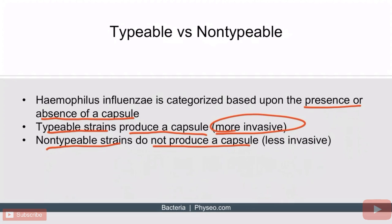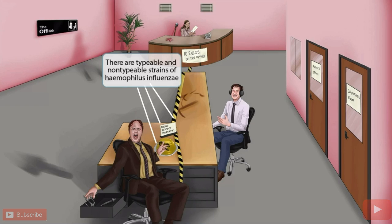In the image, Dwayne has placed a strip of tape dividing his side of the office from James's side. This tape compartmentalizes typable and non-typable strains of H flu. Everything to the left of the tape, on the same side as the jello, represents typable strains. Everything to the right, where there is no jello, represents non-typable strains. Information near Pamelin's desk at the top — where the tape is no longer visible — applies to both typable and non-typable strains.